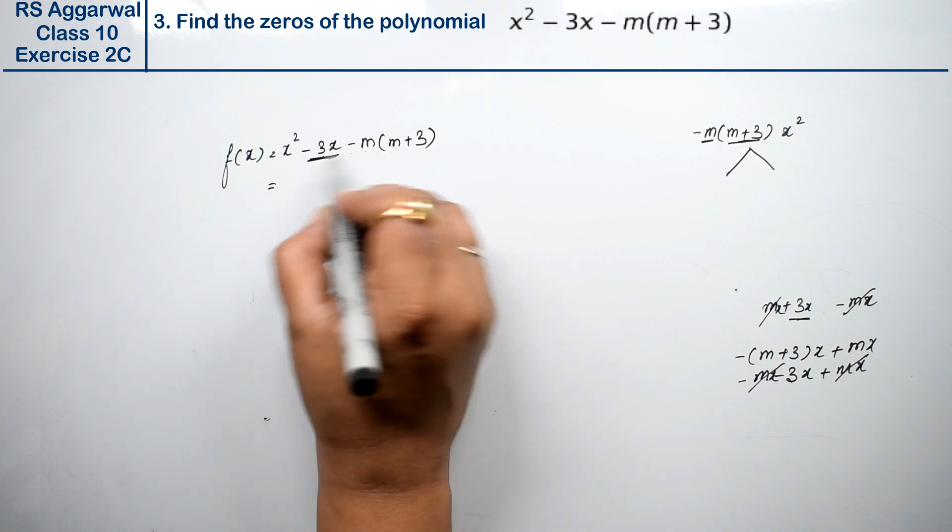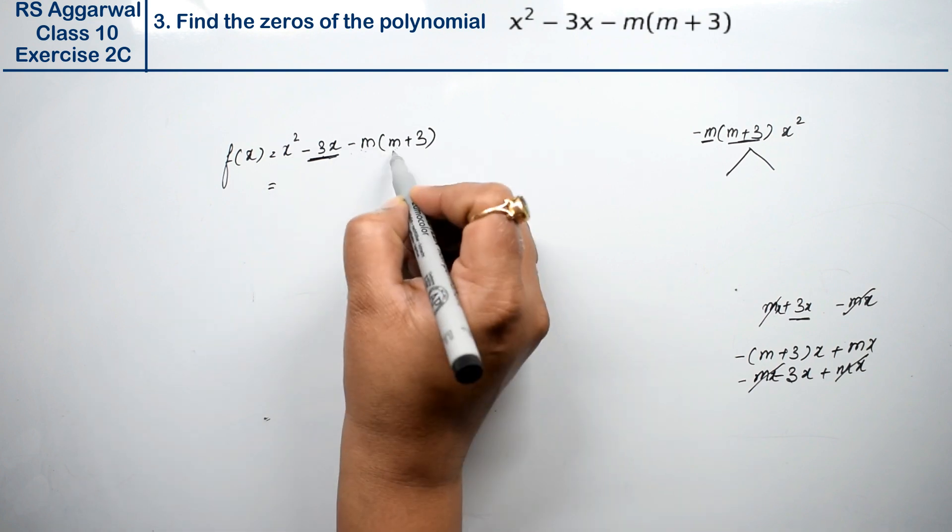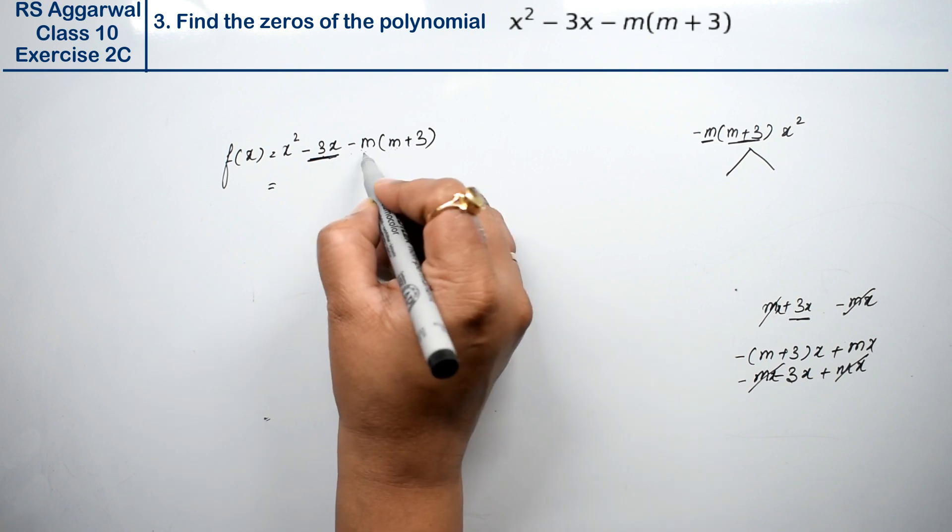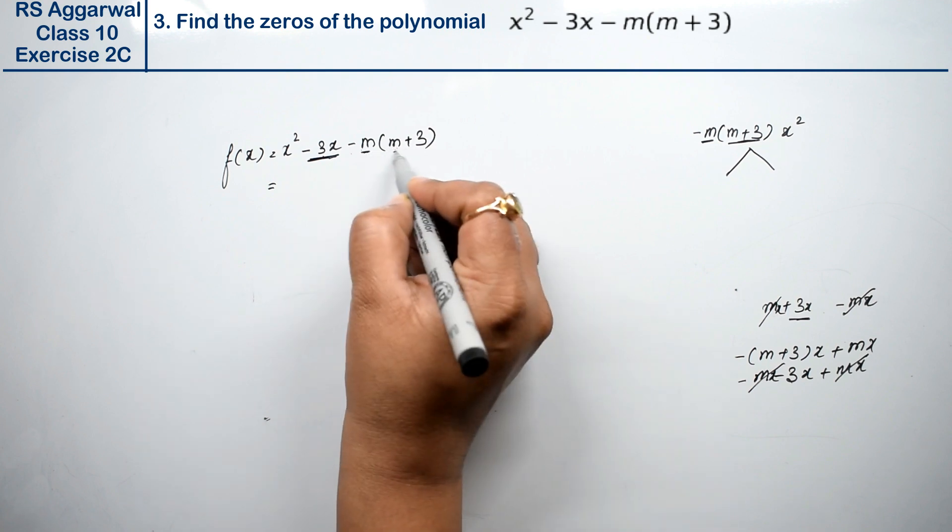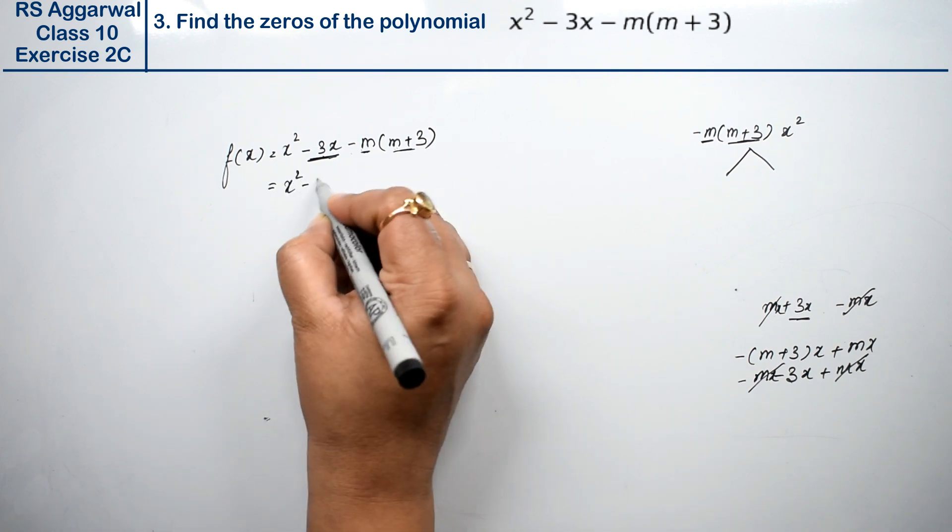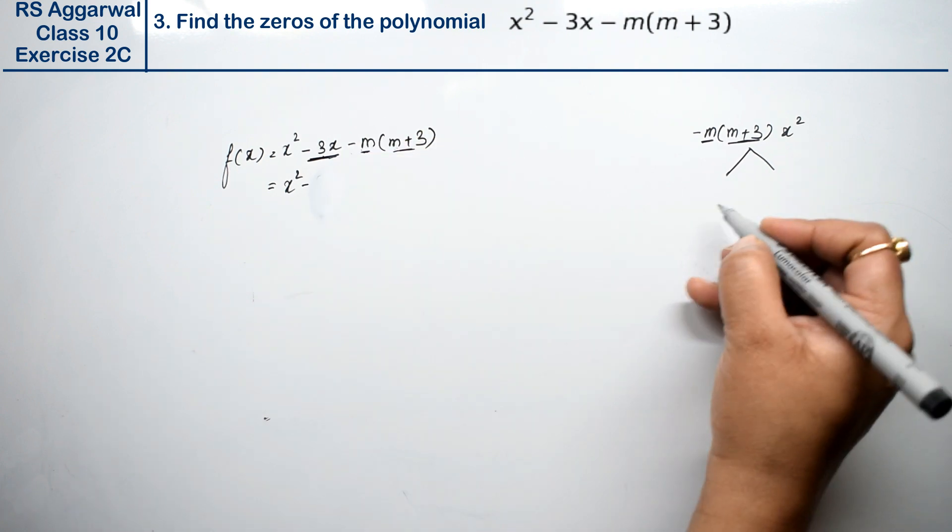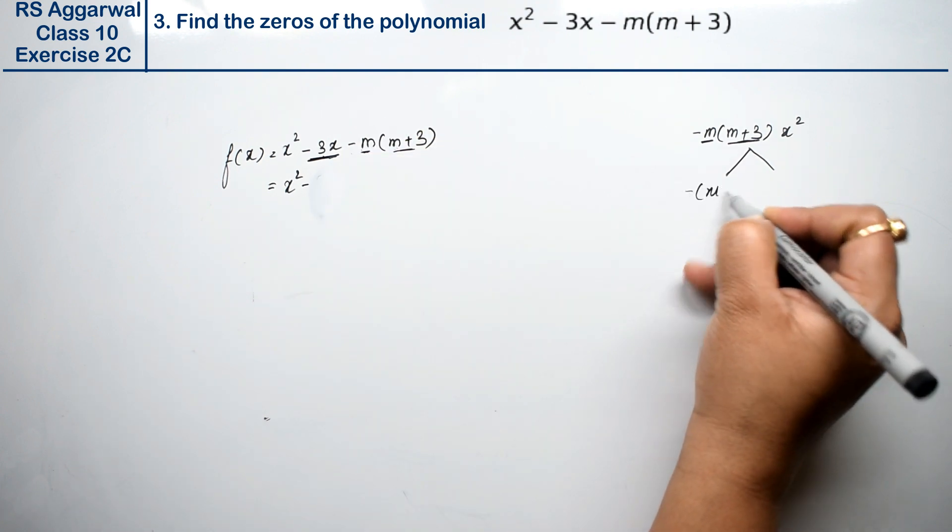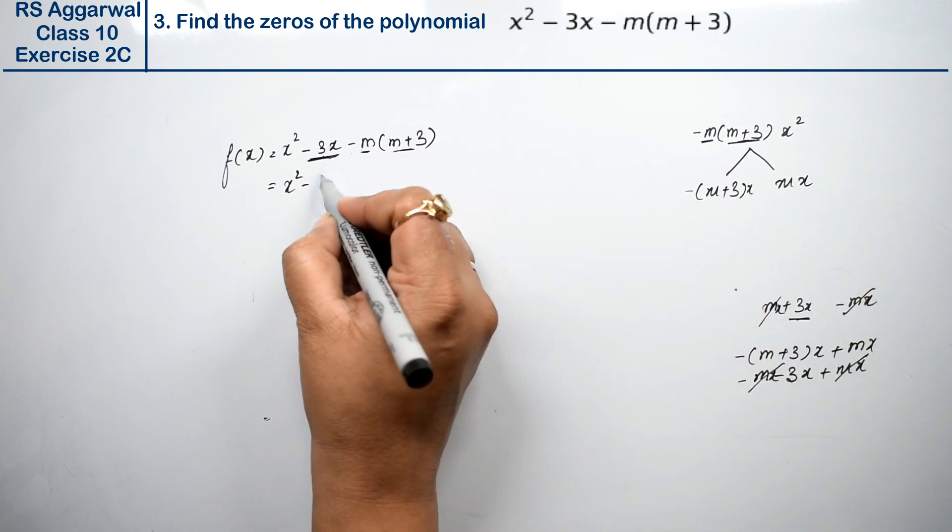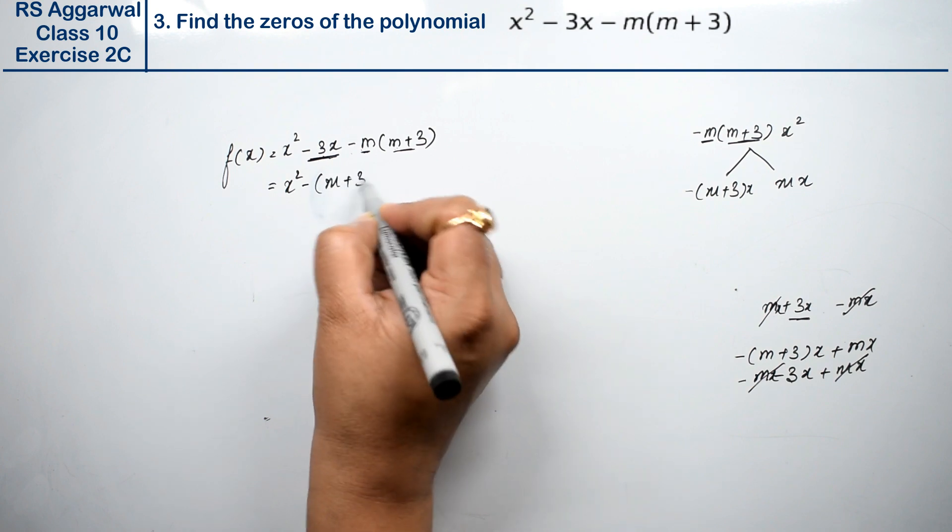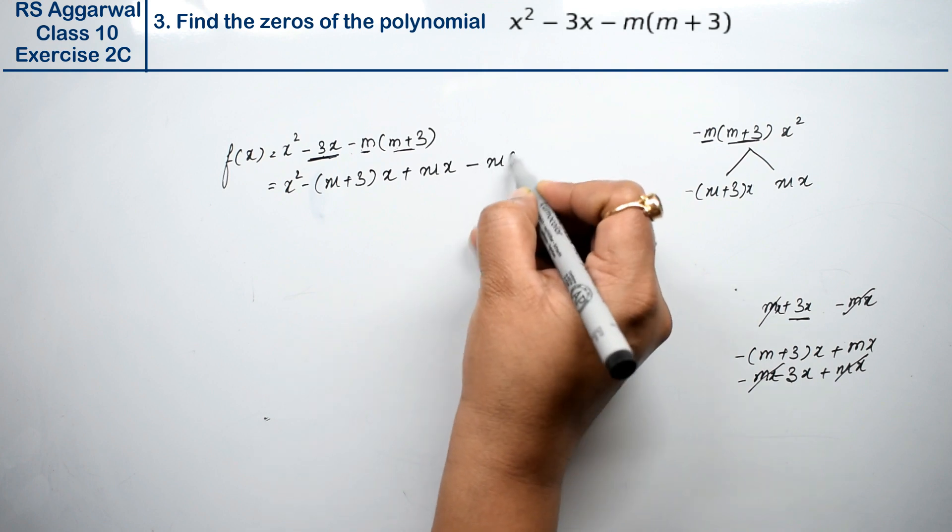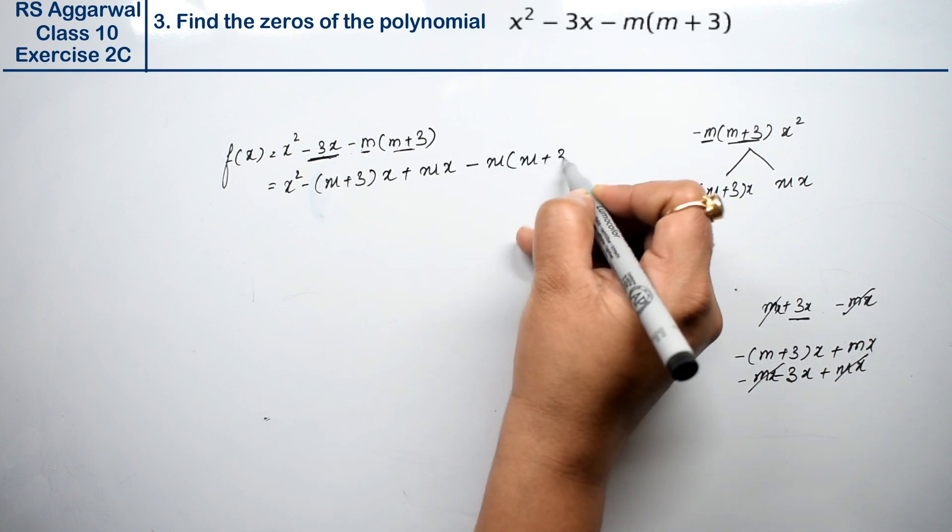I'm explaining again. I multiplied this with this. Now this cannot have factors like 6 can have factors, but this cannot. So we assumed one m and one (m + 3). Right? So what came? x square minus - we need minus, so minus (m + 3)x and plus mx, minus m times (m + 3).